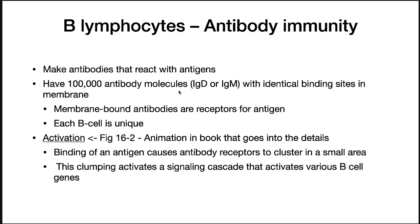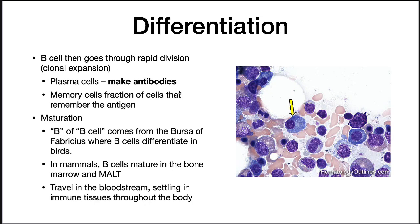Activation takes place when an antigen is recognized by the receptor on the B cell. Binding of an antigen causes antibody receptors to cluster in a small area. This clumping activates a signaling cascade that activates expression of B cell genes and causes them to differentiate. B cells then go through a rapid division called clonal expansion. The majority of these cells differentiate into plasma cells and start making antibodies. A smaller fraction become memory cells — they remain as B cells that can be activated and distribute throughout lymph nodes in the body, ready for a future challenge by this pathogen.